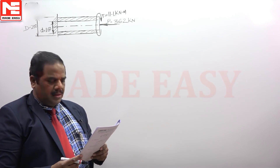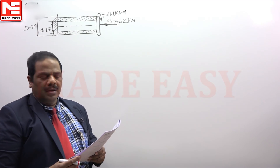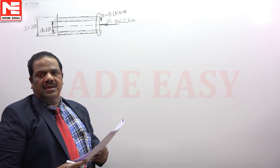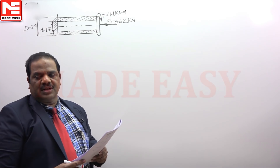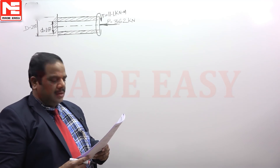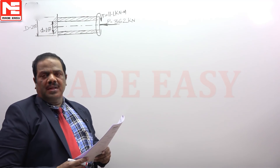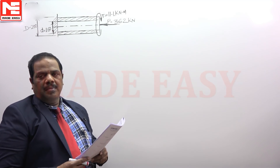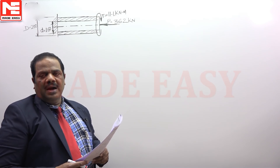For the given loading condition, the critical cross-section is every cross-section, because everywhere the axial load as well as the torque is going to be constant. The axial loading diagram is a rectangle and the torque diagram is also a rectangle. Therefore, every cross-section is a critical cross-section. The critical point on the cross-section will be any point on the periphery, because torsional shear stress is maximum on the periphery and axial stress is the same at every point.